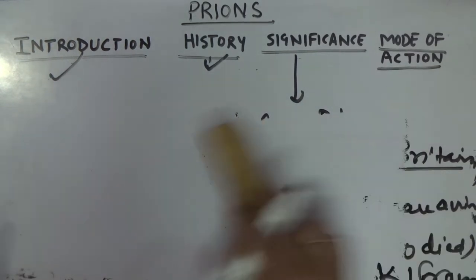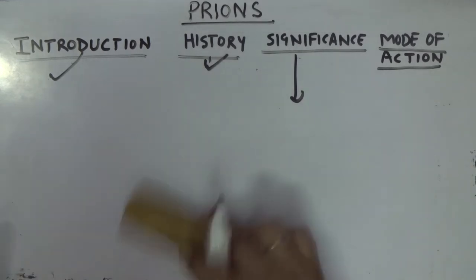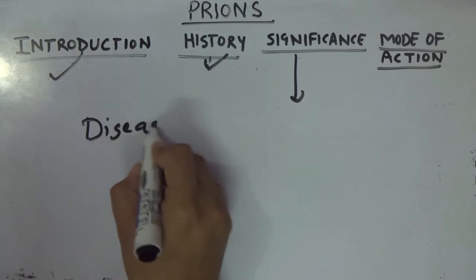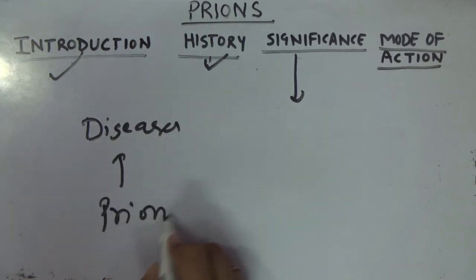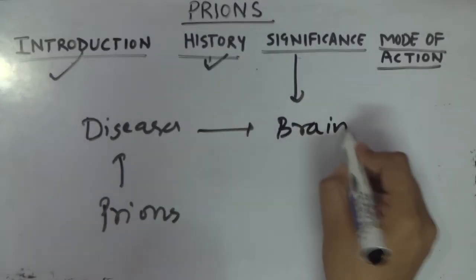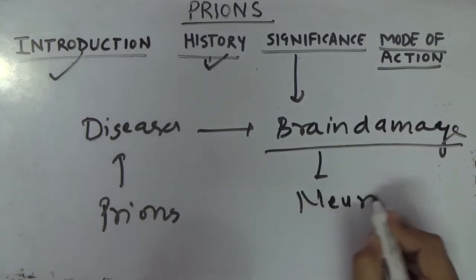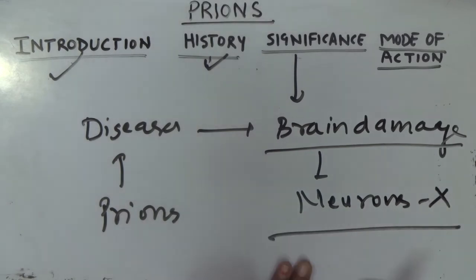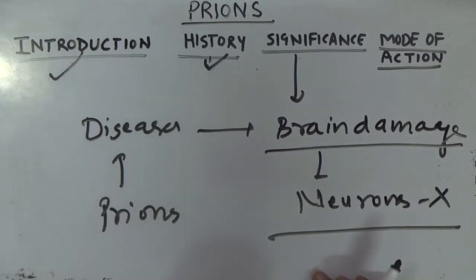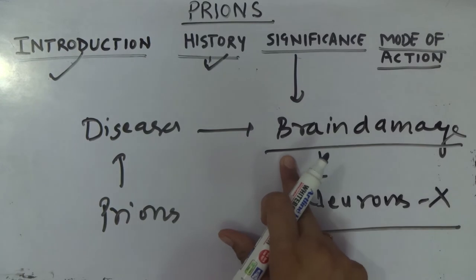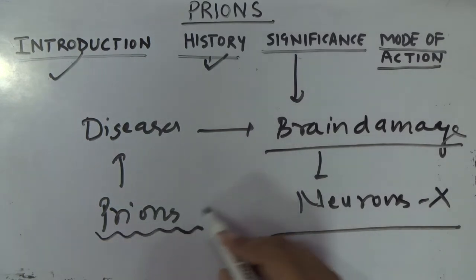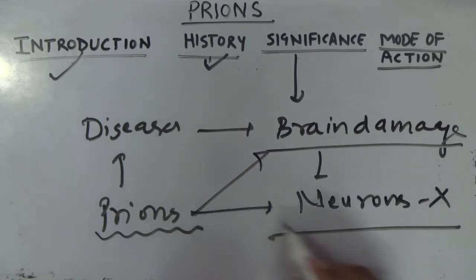All the diseases caused by prions lead to brain damage — they affect the functioning of neurons. Neurons do not properly work in the presence of prions. When prions attack a particular host, it results in brain damage. This leads us to mode of action: how prion proteins result in brain damage and disruption of neuronal functions.